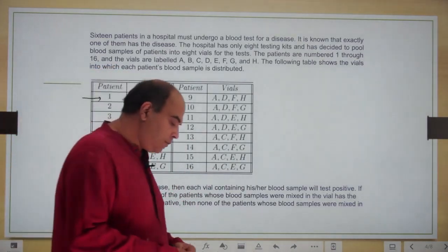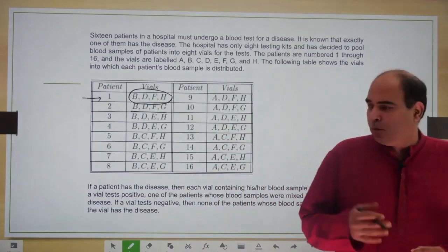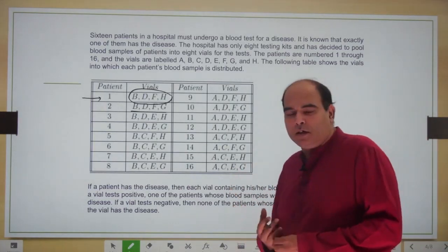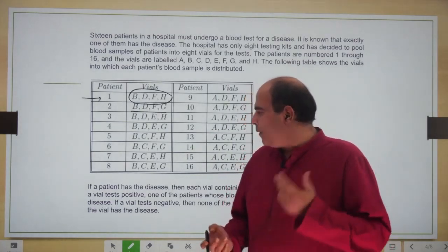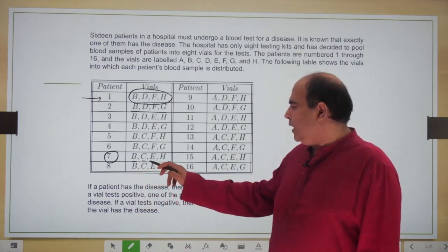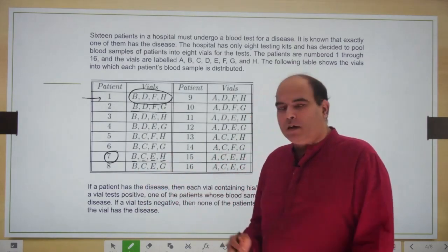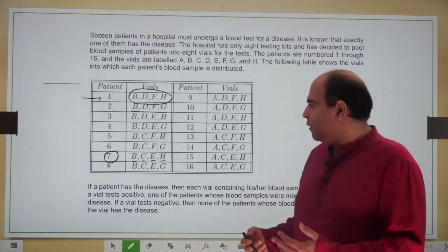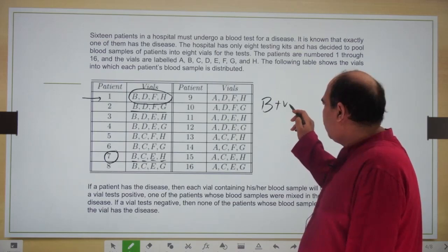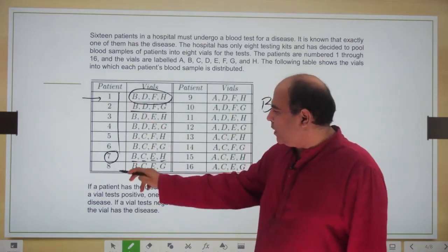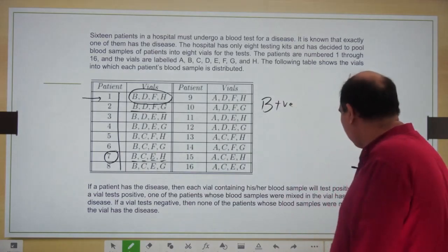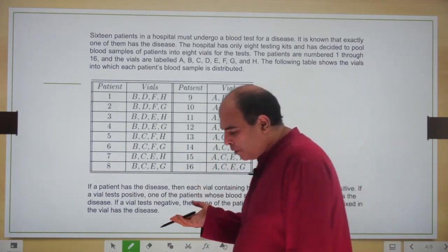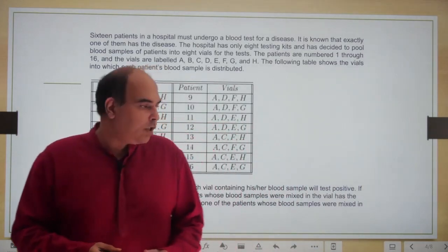You can download this question from Slot 3 of CAT 2020 — do try it on your own before watching my solution. If patient 7 has the disease, for example, vials B, C, E, N, H — those four vials — will turn positive and all others will turn negative. If only vial B turns positive, any of patients 1 to 8 could have the disease since the blood of all those patients is inside vial B. So nothing more to understand in the setup.